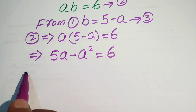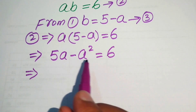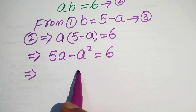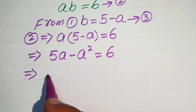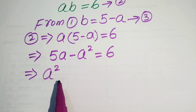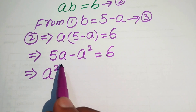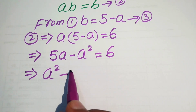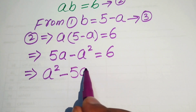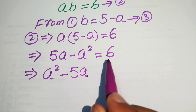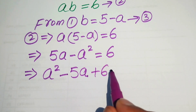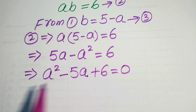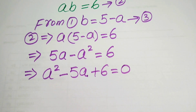Now we rearrange the terms into standard form. Moving the terms to the right hand side: minus a squared becomes plus a squared, and plus 5a becomes minus 5a, with 6 already on the right hand side. The whole equation equals 0.